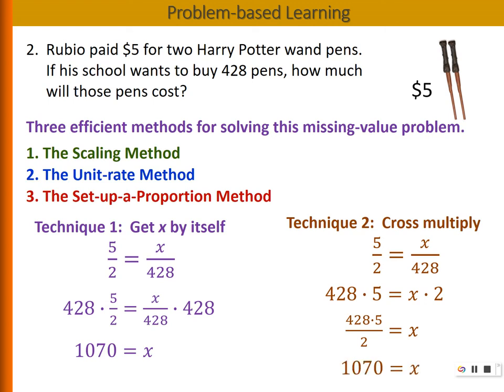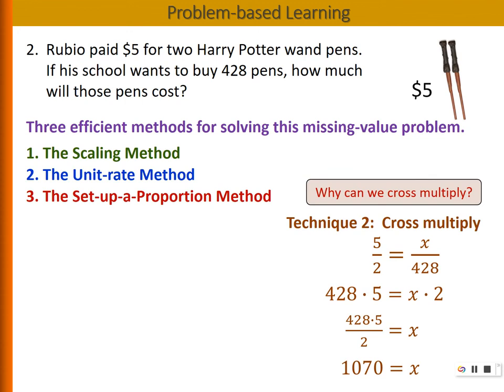Now, if we use this cross-multiply method, it's very important that you need to be able to explain why can we cross-multiply. That means why can we get from the first step and rewrite it as the second equation.